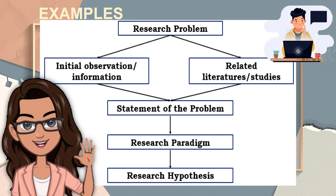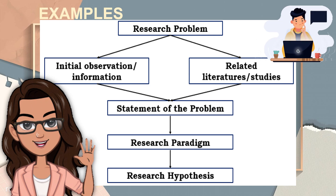Look at this figure. This shows the process of making the research hypothesis. Research should start from the research problem — everything should start here. Then the researcher has to gather relative information about her topic, for example from the researcher's observations or stock knowledge and from the related literature and studies found either from the internet or other sources. From those observations and related literature, the researcher can now create her statement of the problem, which includes the general problem and specific objectives. Once the researcher created the statement of the problem, the next step is to make a conceptual framework or the research paradigm, which we learned from the previous lesson. From that research paradigm, you can use that as a reference to list your hypotheses. A research study can have more than one hypothesis depending on the needs of the research paper.